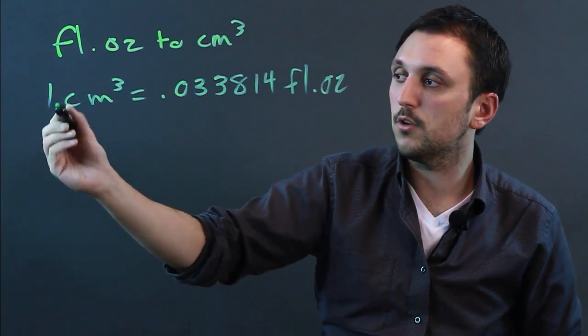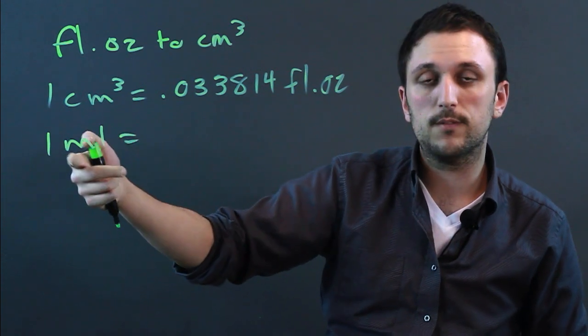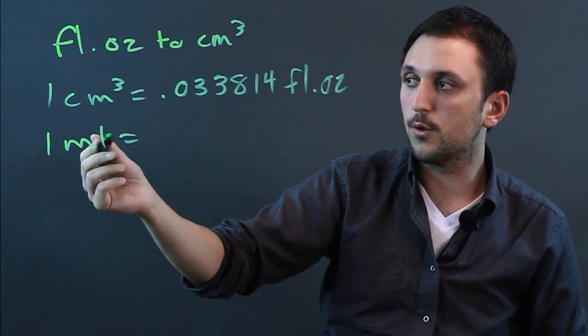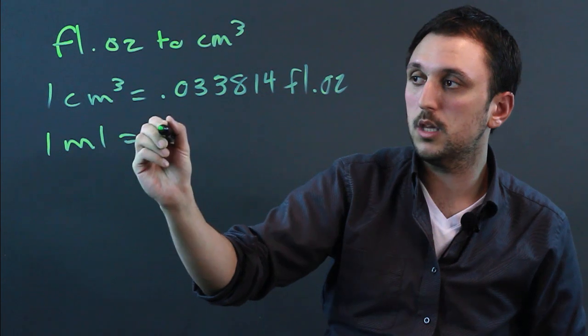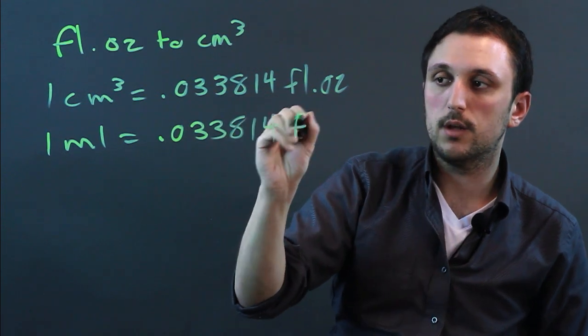And a cubic centimeter is also known as a milliliter, which is the standard unit of volume in the metric system, the liter. And a milliliter is one one thousandth of a liter. So one milliliter also equals 0.033814 fluid ounces.